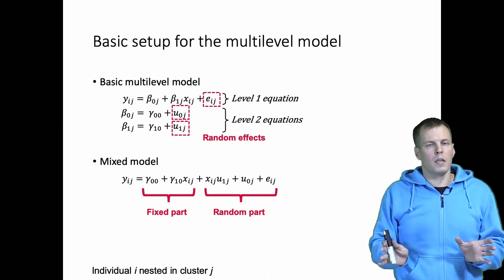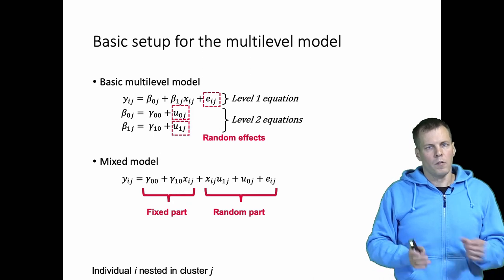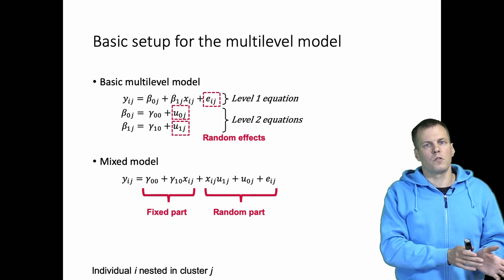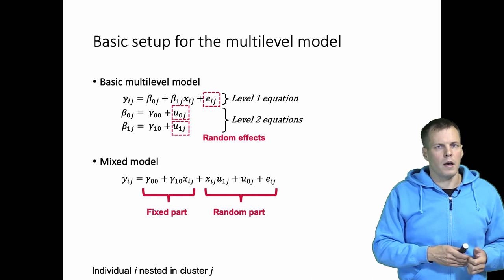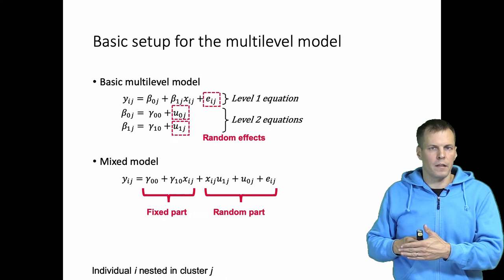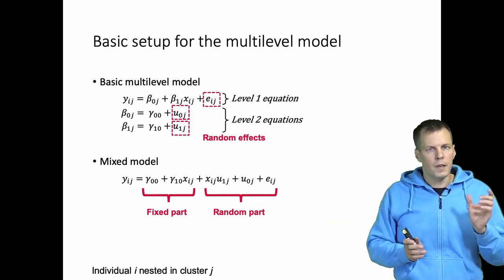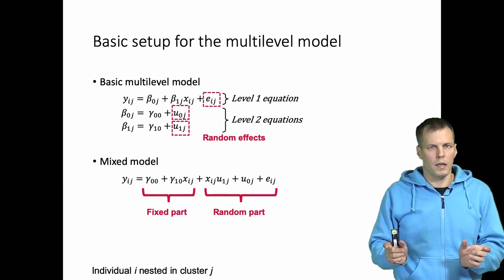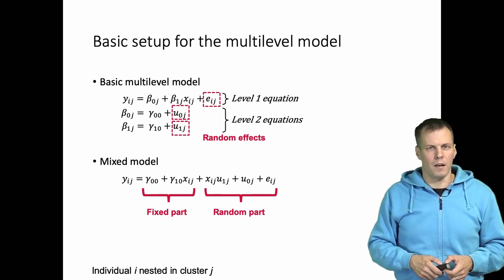To summarize: fixed effects belong to the fixed part and random effects belong to the random part. Fixed effects are specific values that we can use to calculate predicted values for each observation, while the random part consists of variance components — we don't estimate specific values, we just estimate how much the cases vary. The fixed part and the random part are almost always assumed to be uncorrelated, and that is called the random effects assumption, which will be explained in another video.